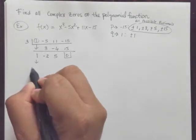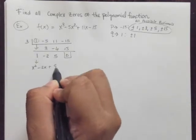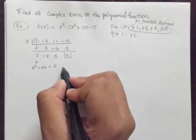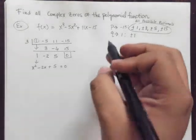So let's take a look here. This gives me x squared minus 2x plus 5. And that equals 0.